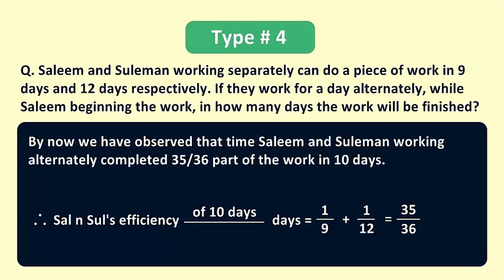By now we have observed that Salim and Suleiman working alternately completed 35/36 part of the work in 10 days, and the next step here is to find the rest of the work.